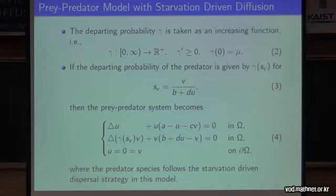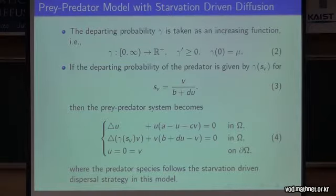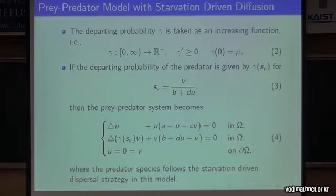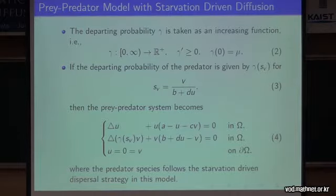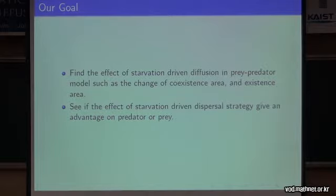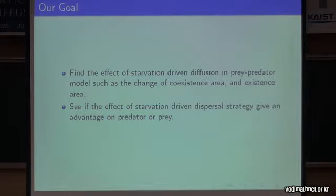Now we are going to talk about the prey-predator model with starvation-driven diffusion. The departing probability is taken as an increasing function, where gamma-prime is greater than or equal to zero and gamma of zero is mu. Here, B plus DU is the amount of food per predator. We can put the starvation measure as V over B plus DU. Then our prey-predator system becomes as follows. We will choose the Neumann boundary condition here. Our goal is to find the effect of starvation-driven diffusion in the prey-predator model, such as the change of co-existence area or existence area. Also, we hope to see if the starvation-driven diffusion strategy gives an advantage to the predator or to the prey.